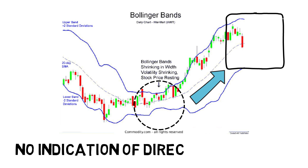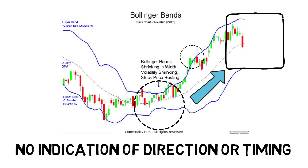However, these conditions are not trading signals. The bands give no indication when the change may take place or which direction price could move. Approximately 90% of price action occurs between the two bands. Any breakout above or below the bands is a major event, but the breakout is not a trading signal. The mistake most people make is believing that the price hitting or exceeding one of these bands is a signal to buy or sell. Breakouts provide no clue as to the direction and extent of future price movements.